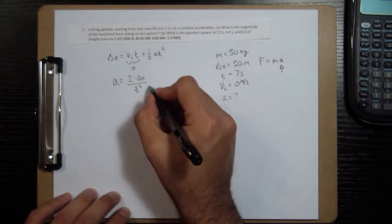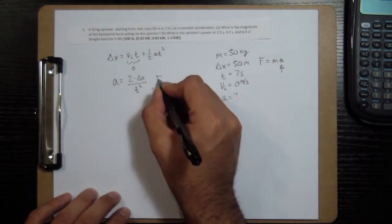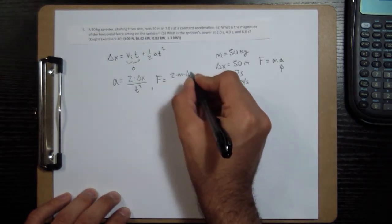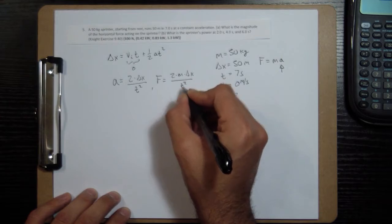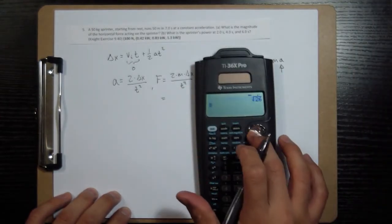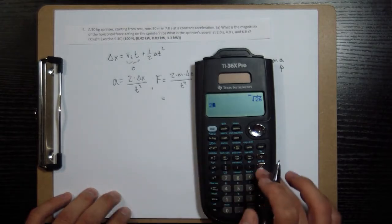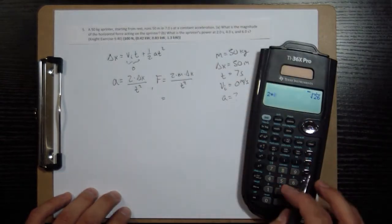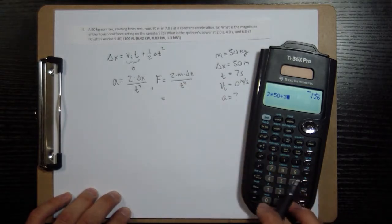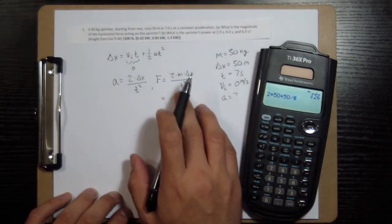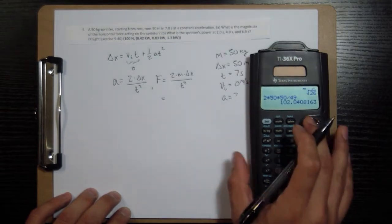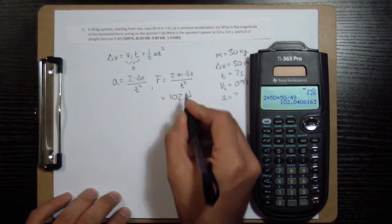And then finally to get the force, the force is going to be this times the mass. So it'll be 2 times the mass times delta x divided by t squared. And we get a number for that. 2 times my mass, which is 50 kilograms, times distance travels, 50 divided by t squared. t is 7, so t squared is going to be 49. Get 102 newtons.